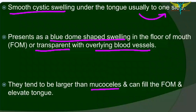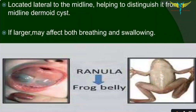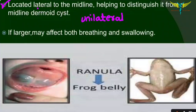Large ranulas can fill the floor of the mouth, and huge ranulas can also elevate the tongue. Ranulas are usually unilateral, so they are not included in midline swellings. The ranula is located lateral to the midline, which helps distinguish it from a midline dermoid cyst. If larger in size, they can affect both breathing and swallowing, and obstruction of the mouth with the tongue can result in sleep apnea or difficulty in swallowing.